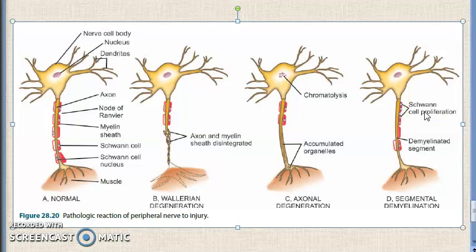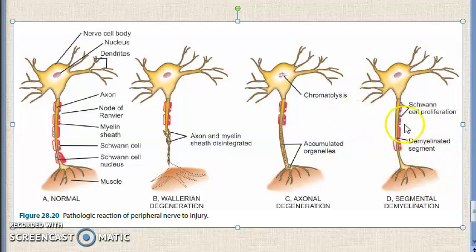Schwann cell proliferation results in remyelination of the affected axon. If there are repeated episodes of demyelination and remyelination, there will be concentric proliferation of Schwann cells around axons, producing onion bulbs, which are found in hypertrophic neuropathy. So every time the cycle of demyelination and remyelination repeats, you get onion bulb appearance.